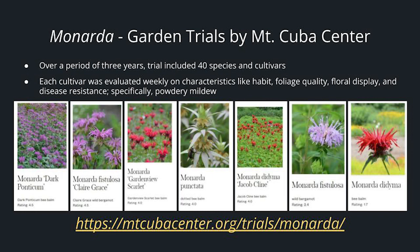We also have Monarda Gardenview Scarlet, another hybrid. Monarda punctata is a good option if you're looking for a wild-type species with excellent powdery mildew resistance. Monarda didyma Jacobs Cline also did quite well, scoring 4.0 — it was selected from the wild growing near the Blue Ridge Parkway. For comparison, Monarda fistulosa came in at 2.4 and Monarda didyma at 1.7.